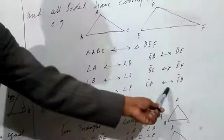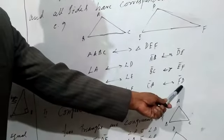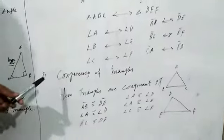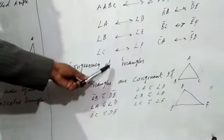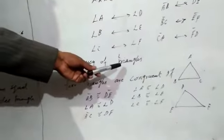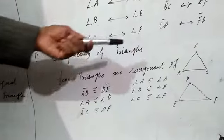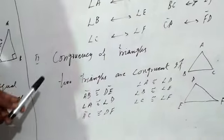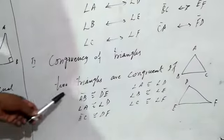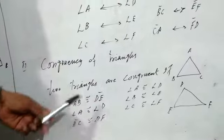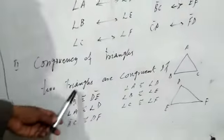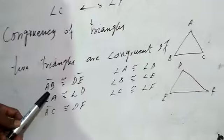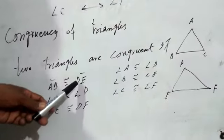The second term is congruency of two triangles. If two triangles are congruent, then the following conditions will hold. Two triangles are congruent if side AB is congruent to side DE.